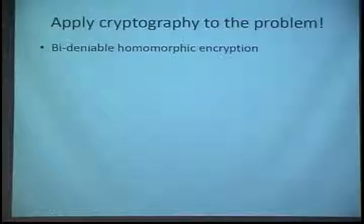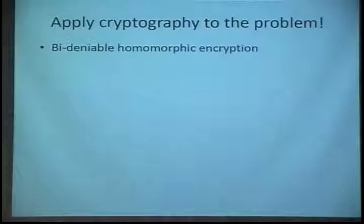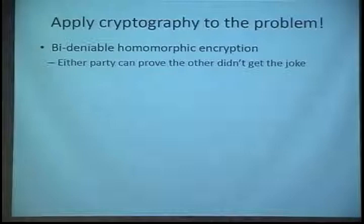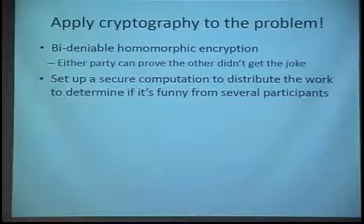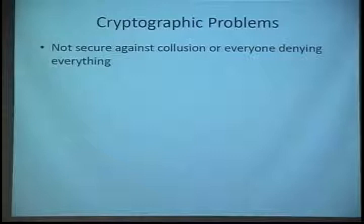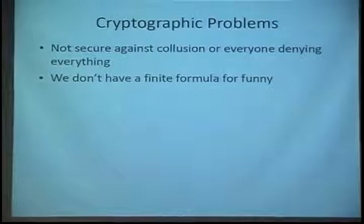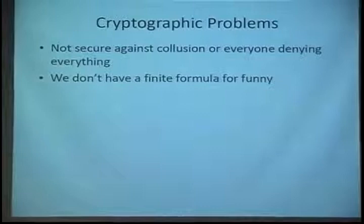You'd think this might have worked, but it failed because secure devices really have no sense of humor at all. So they decided to apply cryptography to the problem, and they decided first to try bi-deniable homomorphic encryption. You know about fully homomorphic encryption, and you know about somewhat homomorphic encryption. You may not know about bi-deniable homomorphic encryption — this is where either party can prove the other party didn't get the joke. But they couldn't figure out how to do that, so they decided to try secure multi-party computation, because they have a lot of parties here to do computation and could distribute the work to determine if it's funny. But that also has problems because it's not secure against collusion or everyone denying everything completely, and we don't really have a finite formula for determining whether something is funny.